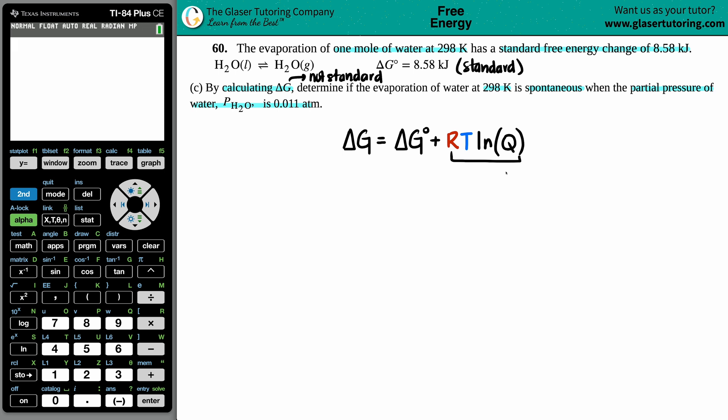You might recognize this by the RT ln(K) if we were solving for a ΔG° standard value. Now I can't put K because we're not at equilibrium, well, we might not be at equilibrium, so that's why we have to put a Q here.